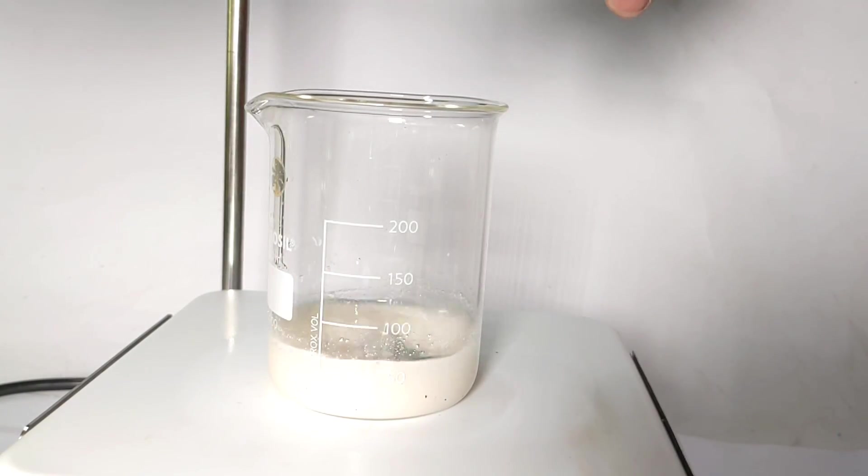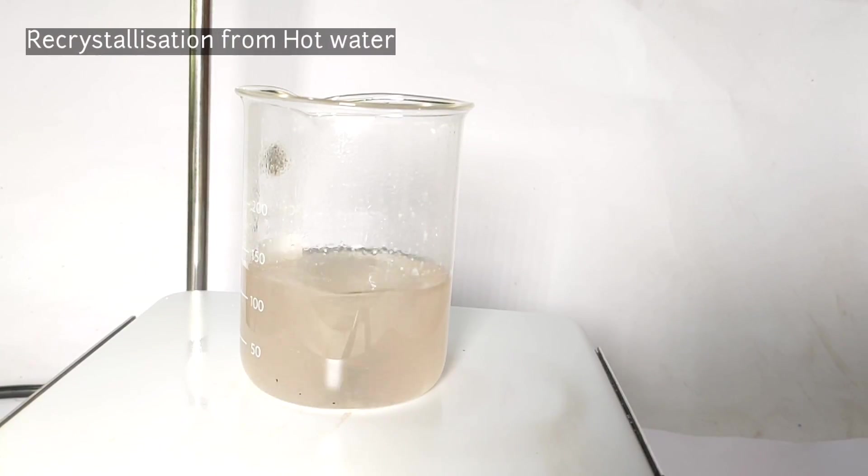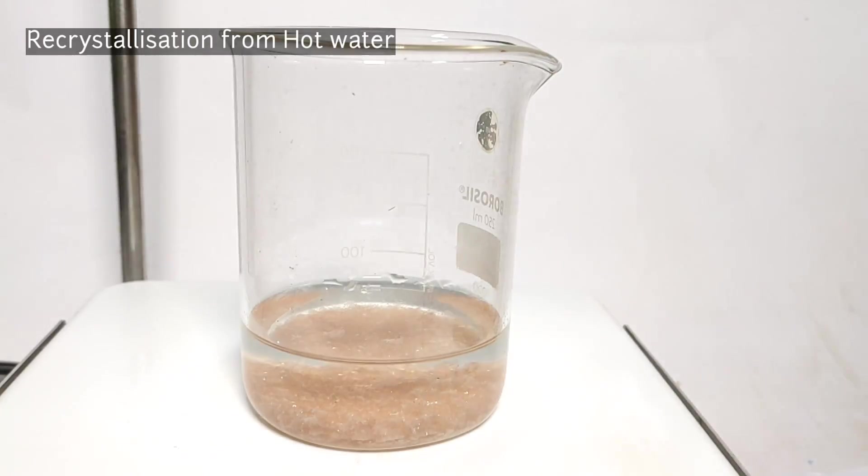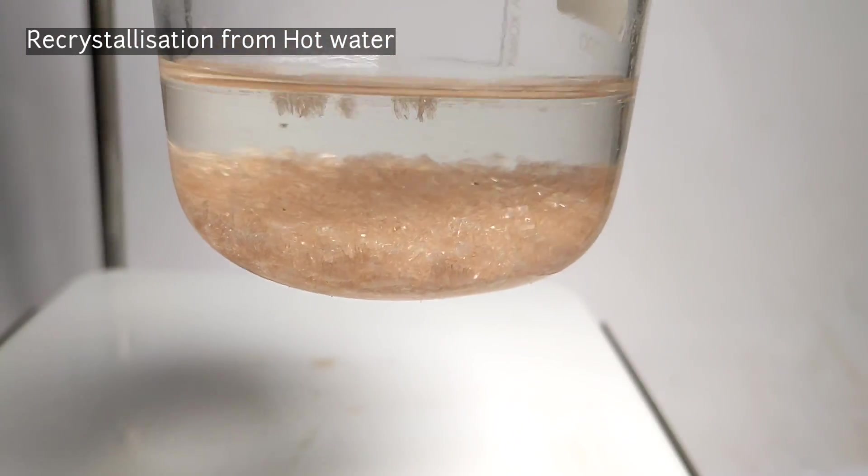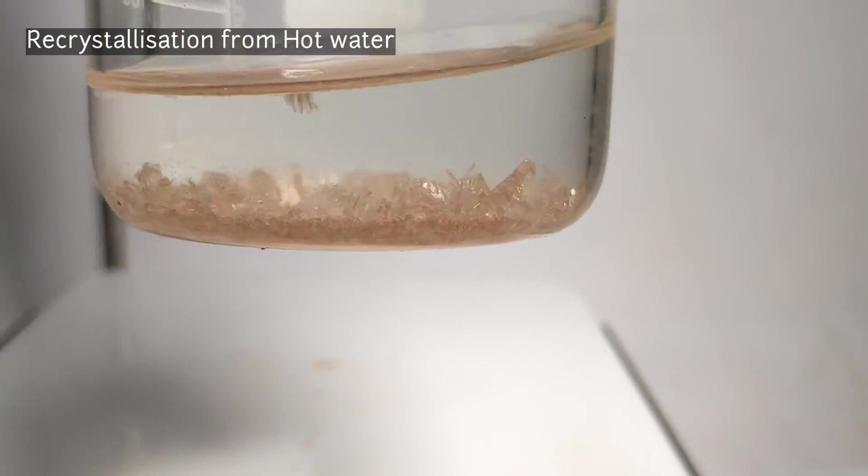The crude product was then recrystallized from hot boiling water. On cooling, the crystals of orthochlorobenzoic acid was formed. It was then filtered. I used a simple gravity filtration method and then dried.